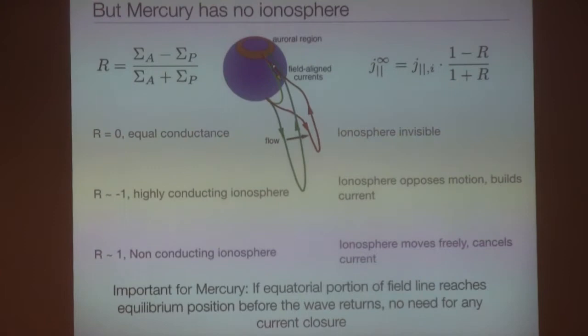Here's the formula that gives you the buildup in the current. So this is the initial Alfven current, a current associated with the initial Alfven wave. Every reflection then builds up this current. In a non-conducting ionosphere, like at Mercury, the ionosphere moves freely. It doesn't just ignore the current, but actually sends an Alfven wave that cancels that current. It tells the magnetosphere, I don't need that current. You can keep it. But important for Mercury, it turns out, is that as the equatorial portion of that field line reaches the equilibrium position before that Alfven wave even comes back, that Alfven wave is not even needed. So it may turn out that for Mercury, it doesn't even matter that it has an ionosphere or not. Depends on the time scales.